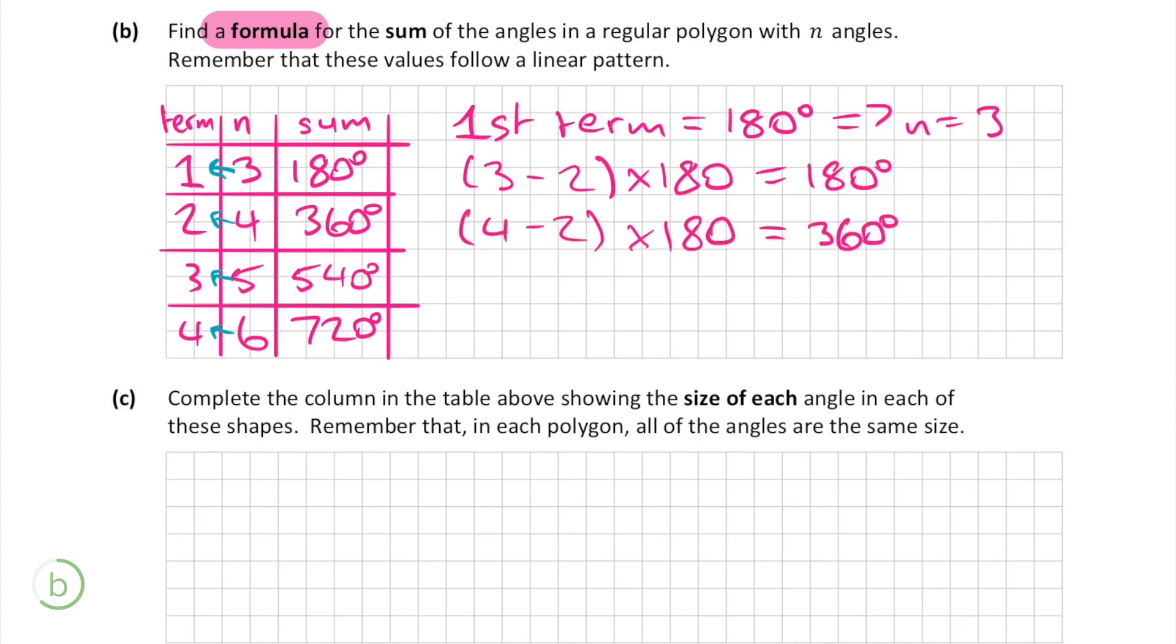For the second term this can be written as 4 minus 2 as that gives us the second term and multiply it by 180 to give us 360 degrees. Now you can start to see that this will work for any term.